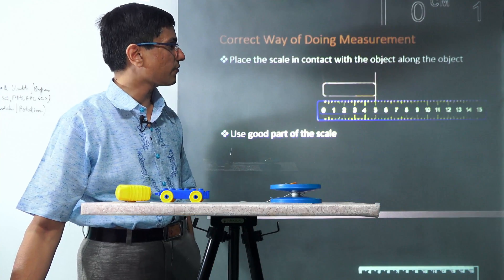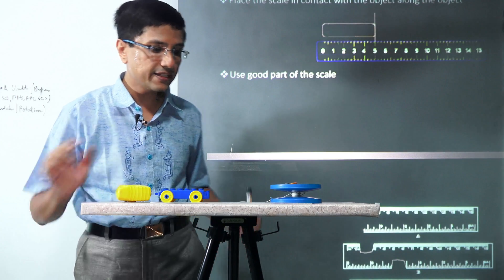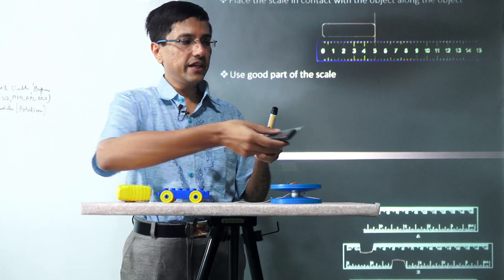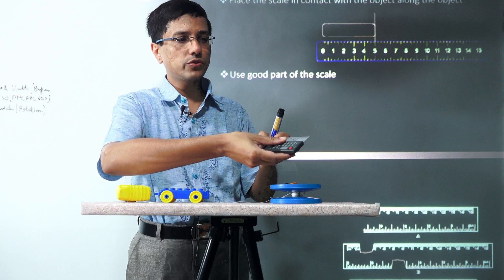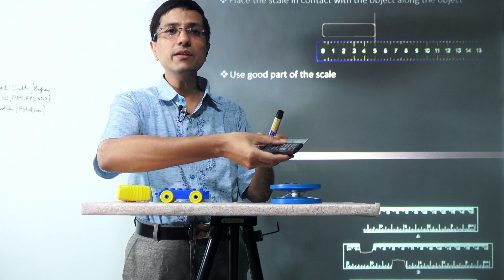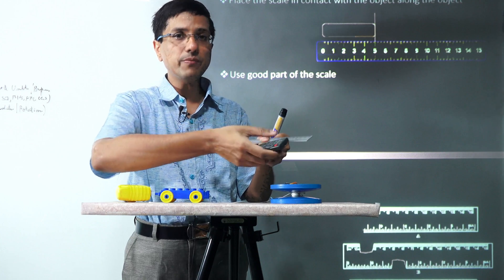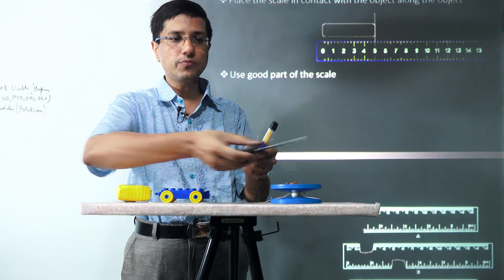The second consideration while doing the measurement is that it has to be done properly. The measurement ruler has to be kept close to the object being measured.